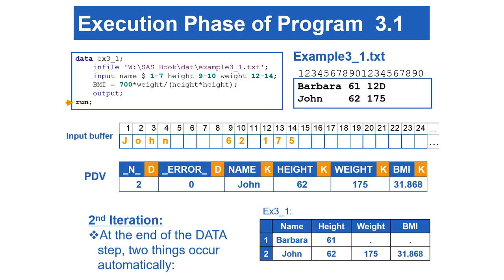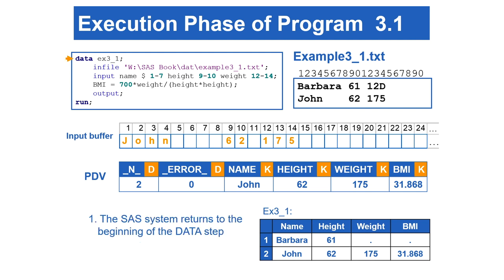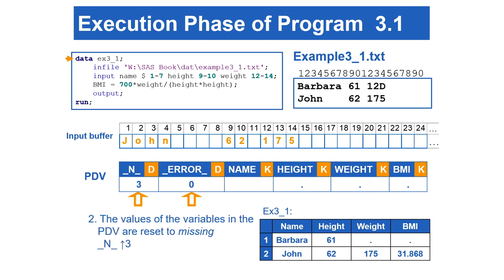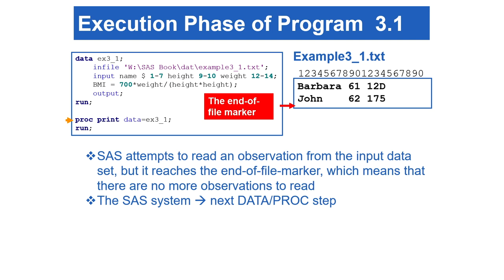When SAS reaches the end of the Datastep, two things happen automatically again. SAS returns to the beginning of the Datastep, and _N_ is incremented to 3 with the rest of the non-automatic variables set to missing. SAS attempts to read an observation from the input dataset, but it reaches the end-of-file marker, meaning there are no more observations to read. When the end-of-file marker is encountered, SAS goes to the next data or proc step in the program.